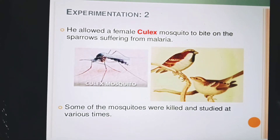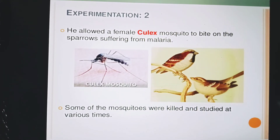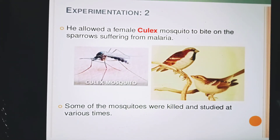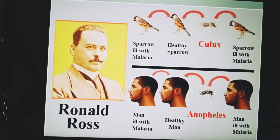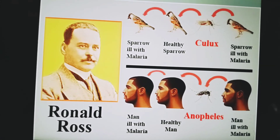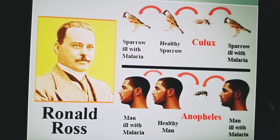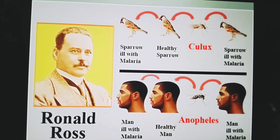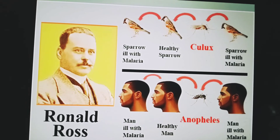Ross found that plasmodium multiplied in the wall of the mosquito's stomach and then moved into the mosquito's salivary glands. He kept some mosquitoes alive and allowed them to bite healthy sparrows. Ross found that the saliva of the infected mosquito contained plasmodium — the plural of plasmodium — and these entered the sparrows' blood. When he examined the blood of these previously healthy sparrows, he found many plasmodium in it.